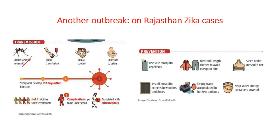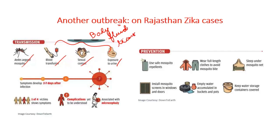The mediums of transmission for the Zika virus are: through the Aedes aegypti mosquito (which acts as a vector), through blood transfusion, through sexual contact, and through exposure to urine — the latter three indicating body fluid-induced transmission of the Zika virus. The transmission of Zika virus was asked in the 2017 prelims paper, so it becomes important to know how different zoonotic diseases spread and their means of transmission.